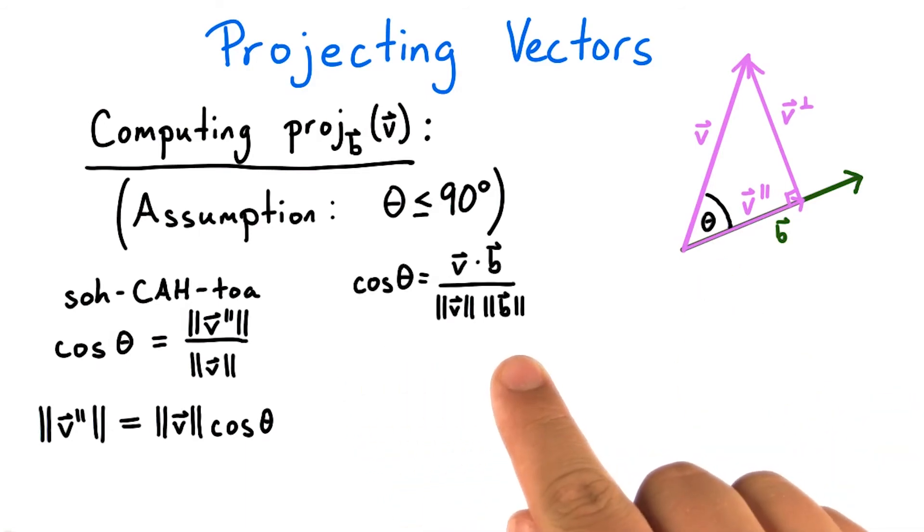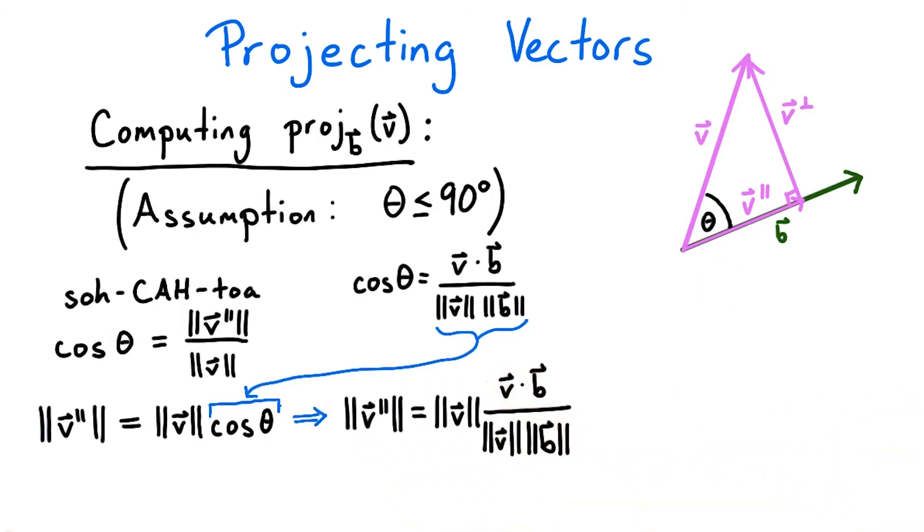Substituting this expression in for cosine theta, we get that the length of v parallel equals the length of v times this expression. Since we have a factor of the length of v in the numerator and denominator of the expression, we can cancel them.